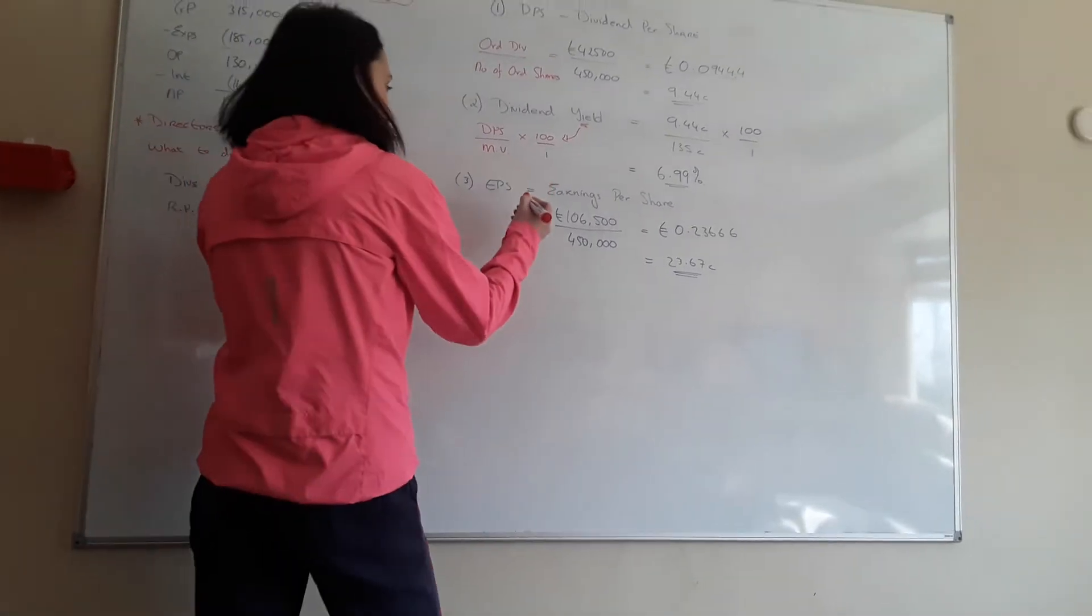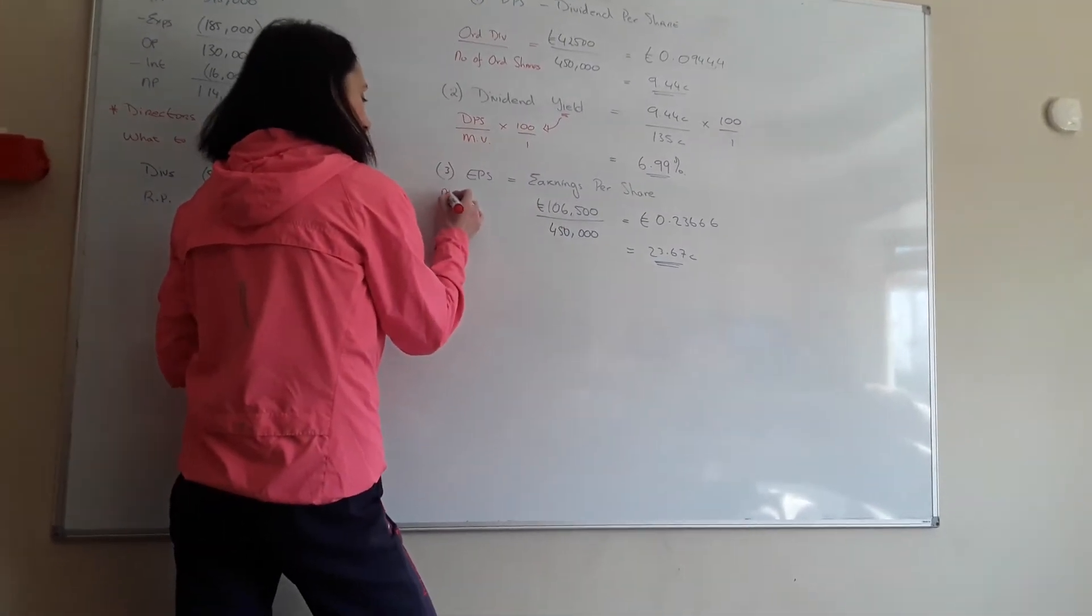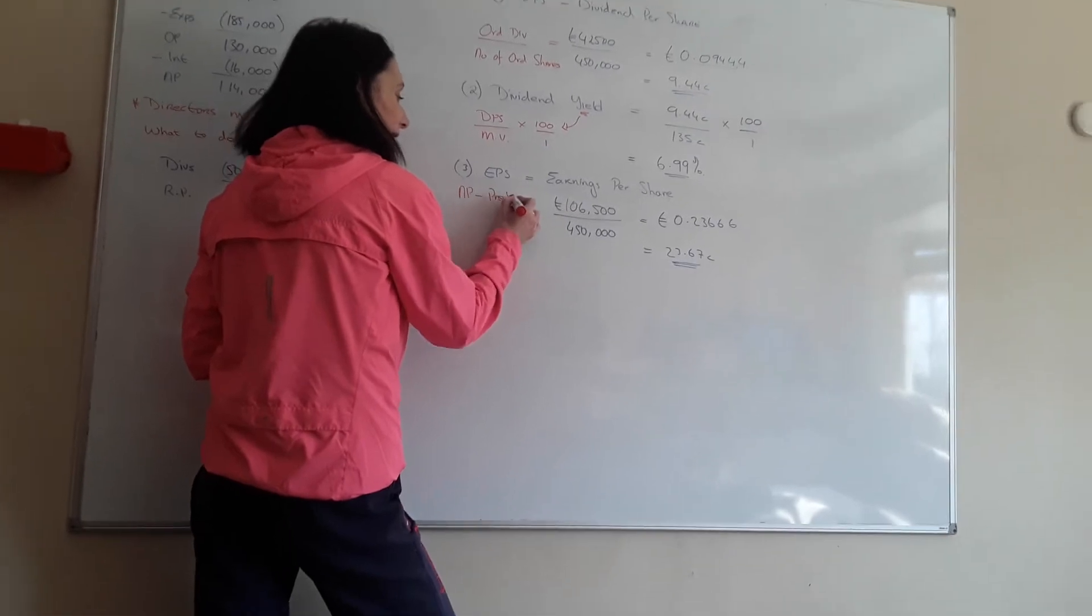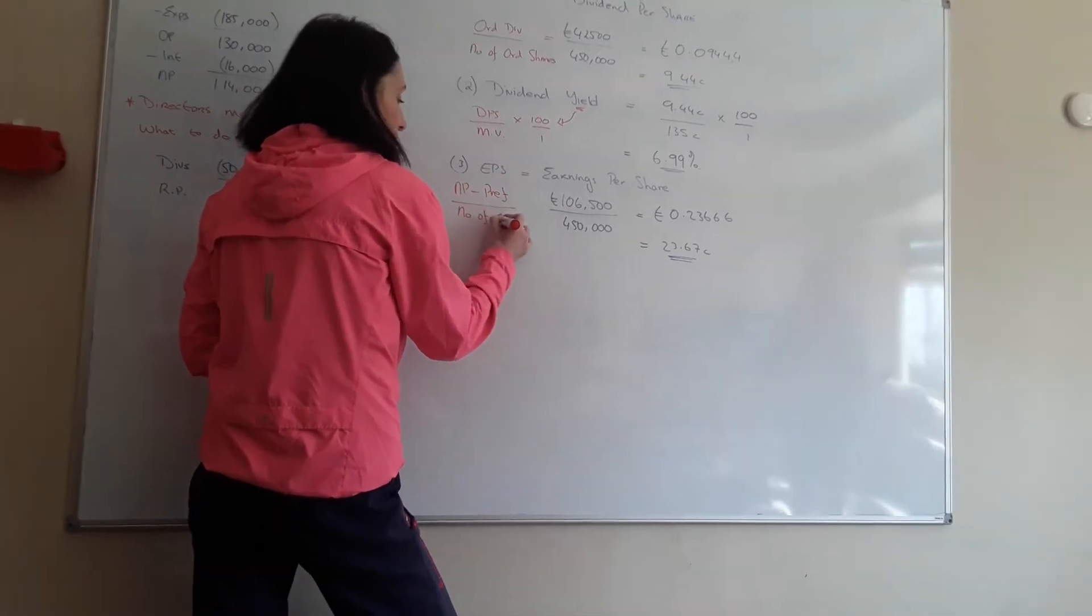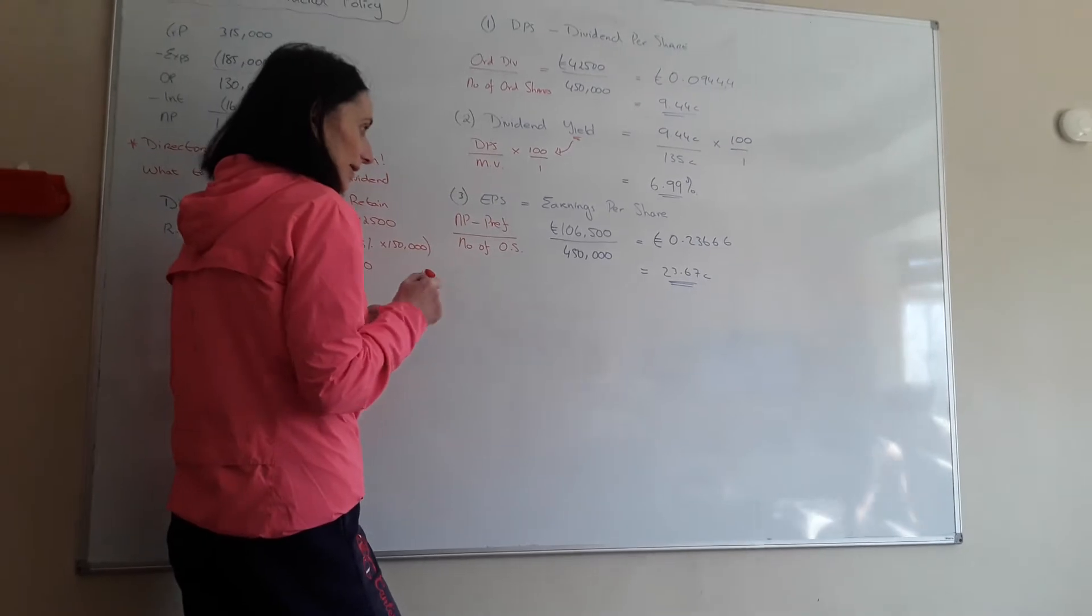The formula here then, just be careful of this formula, it's net profit minus the preference that they have to be paid divided by the number of ordinary shares, OS for ordinary shares.